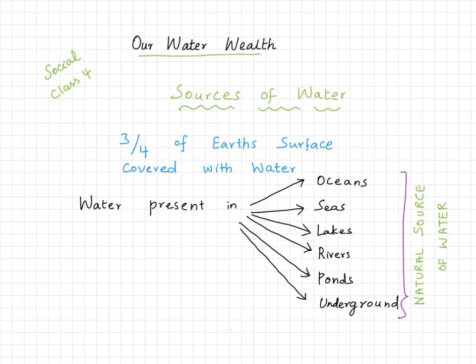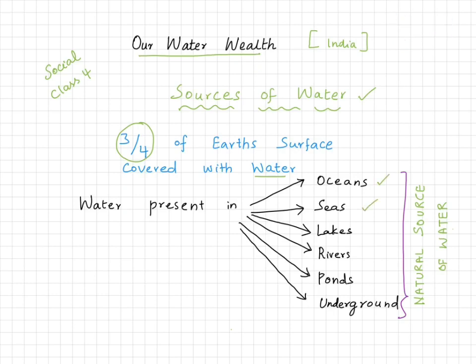Firstly, the sources of water — that is, from where we are getting water — is called a source. You know that 75% of our earth is covered by water, and water is present in oceans, seas, lakes, rivers, ponds, and underground. These are all natural sources of water.